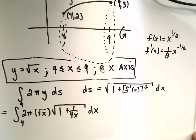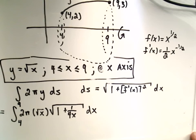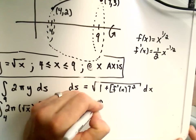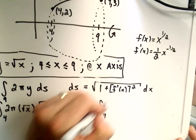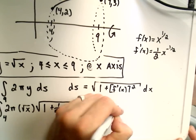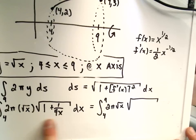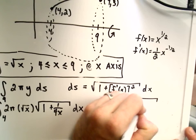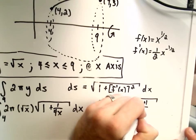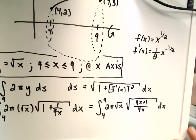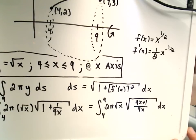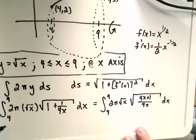Okay, so now it's a matter of trying to simplify this thing down and integrate it. Okay, so this will be from 4 to 9. We've got 2π√x. Now, I'm just going to get common denominators underneath the square root. I would get 4x plus 1 over 4x dx.